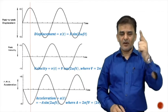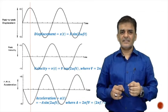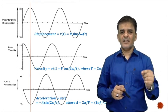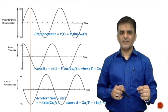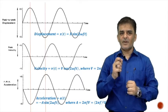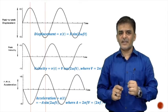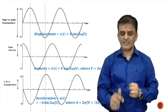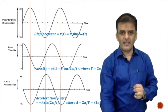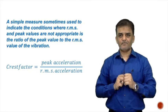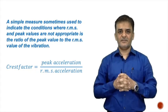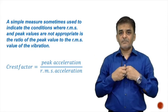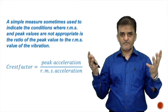The relationship between displacement, velocity, and acceleration shows that when displacement is at its peak, velocity is zero and acceleration is at its highest. When displacement is at its most negative value, velocity is again zero and acceleration is highest in the opposite direction.